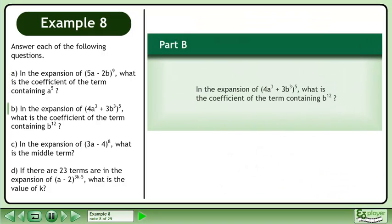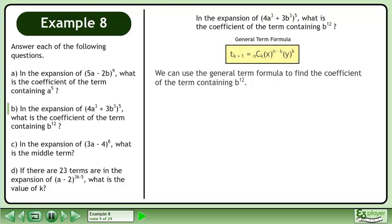Now we'll move on to part b. In the expansion of 4a^(-3) plus 3b^(-3) raised to the power of 5, what is the coefficient of the term containing b raised to the power of 12? We can use the general term formula to find the coefficient of the term containing b to the power of 12.